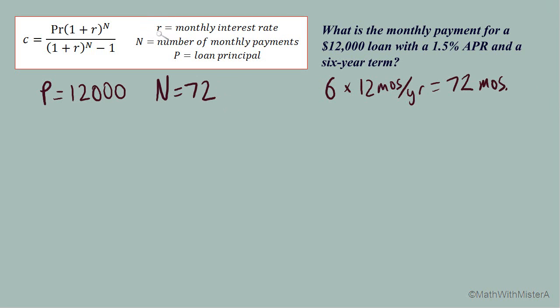Lastly we need to find r, the monthly interest rate. We currently have the annual percentage rate 1.5%. Now we know that we need to have this not as a percent but as a decimal so 0.015, but this is still yearly for the entire year. The A is for annual and this formula requires a monthly rate which means we need to take our annual rate and divide it by 12 for the 12 months in the year and that gives us 0.00125 for our monthly interest rate written as a decimal.